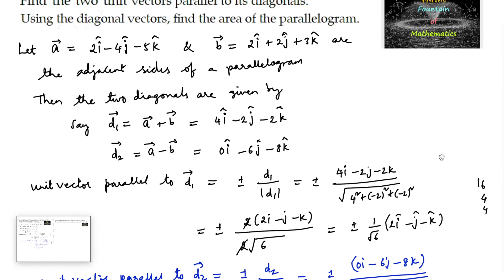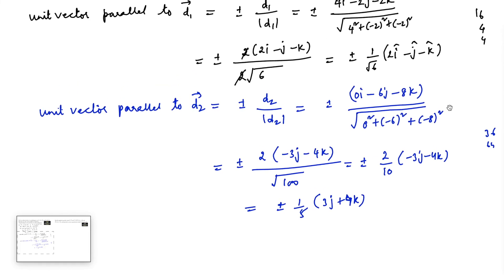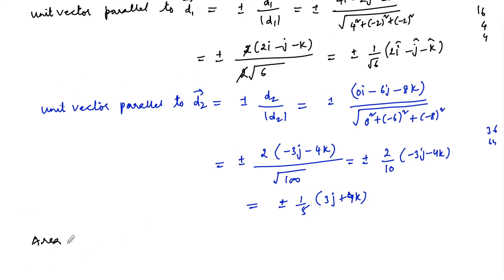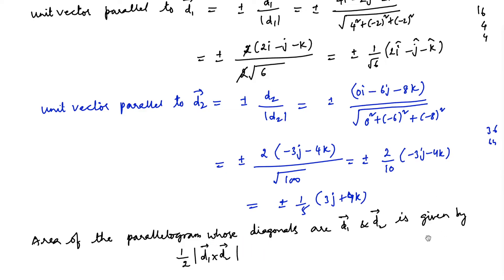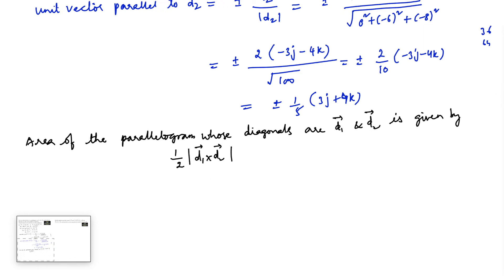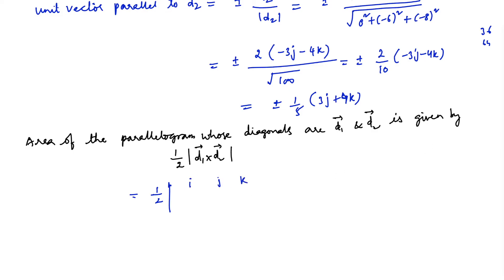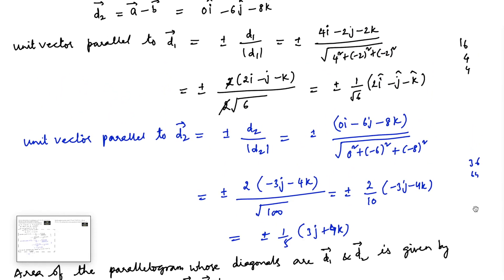Now we need to find the area of the parallelogram using the diagonal vectors d1 and d2. The area of a parallelogram whose diagonal vectors are d1 and d2 is equal to (1/2)|d1 × d2|. So let us find the modulus of d1 × d2, which is (1/2) times the magnitude of the cross product.